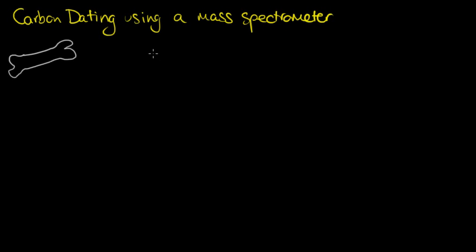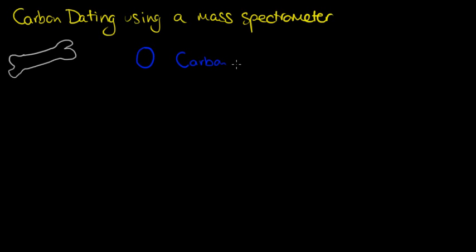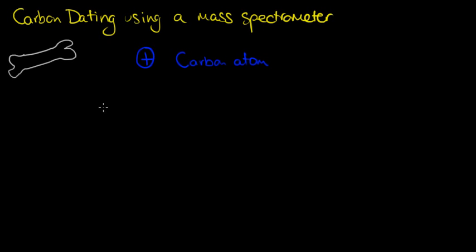A mass spectrometer works as follows: if you have a carbon atom, we ionize it — we give it some charge. Traditionally, mass spectrometers give it a positive charge by knocking off electrons. It's very easy to remove electrons from the nucleus to give it a net positive charge. We need that charge in order to use it in the mass spectrometer.